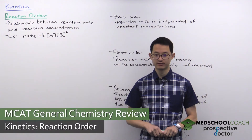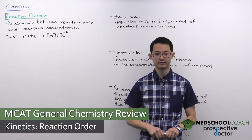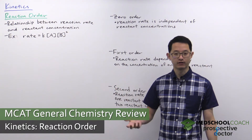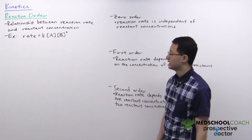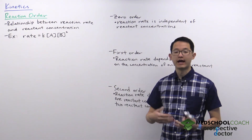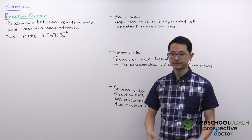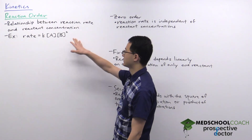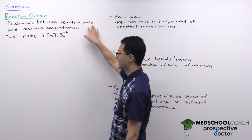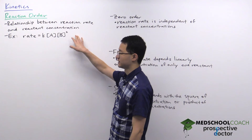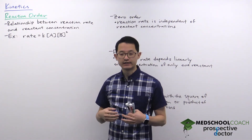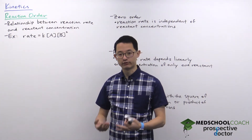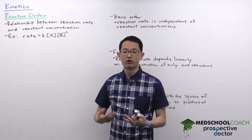In this video we're going to discuss reaction order. Reaction order, which we've already seen when writing out rate laws for different reactions, refers to the exponent for each reactant. It describes the relationship between the reaction rate and reactant concentration. You can describe the reaction order for a particular reactant or for the overall reaction.